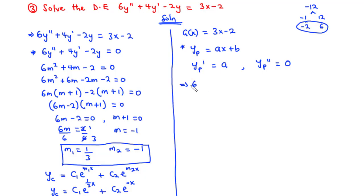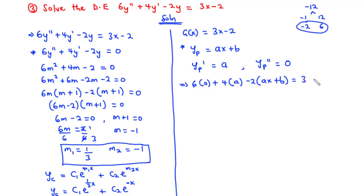Plugging y'', y', and y into the original differential equation: 6(0) + 4(a) − 2(ax + b) = 3x − 2. Simplifying: 4a − 2ax − 2b = 3x − 2.